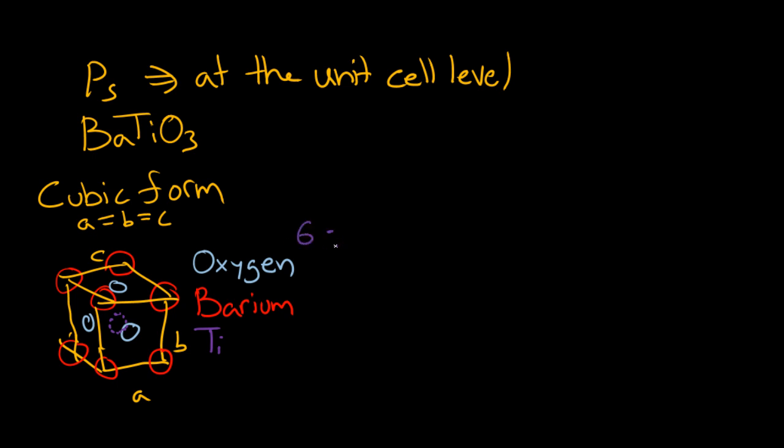It's one half, so there are three oxygens. The titanium atom is completely inside the cell, so there's just one titanium atom. The barium atoms, there are eight of them for the eight corners, but they only share one eighth of the cell, so there's one barium.